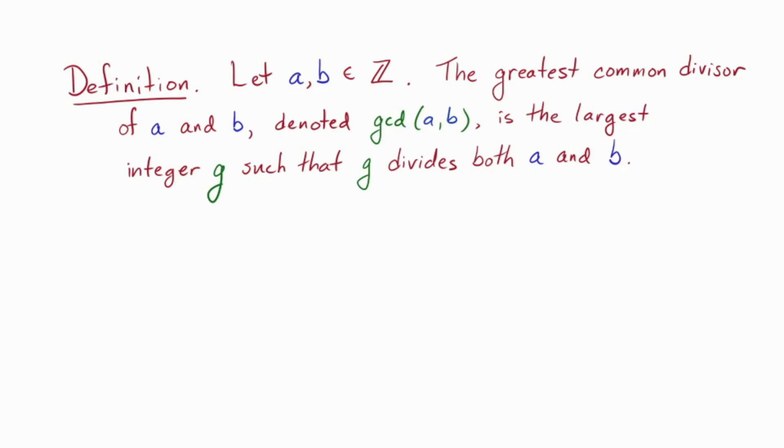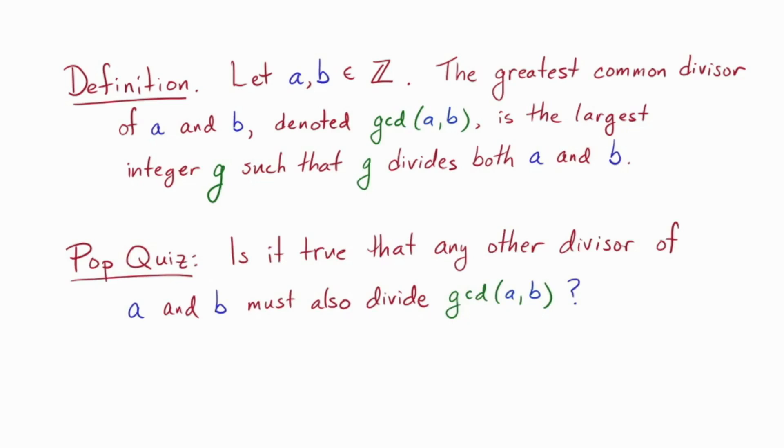So, it's just the greatest common divisor. A quick footnote here. Some prefer a definition that goes something like this: g divides a and b, and if anything else divides a and b, then that other thing also divides g. It's a bit more roundabout, but it does have certain virtues. But, it's the same thing in the end. We'll stick to the more intuitive one that I have written here. But, it does provide a good opportunity for a pop quiz. Is it true that any other divisor of a and b must also divide the gcd of a and b? Pause the video and explain why.